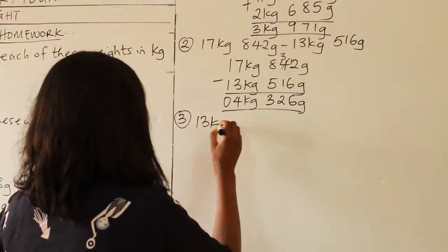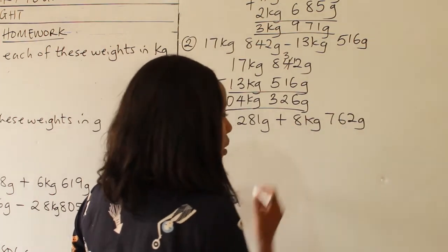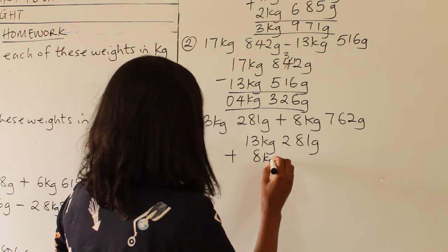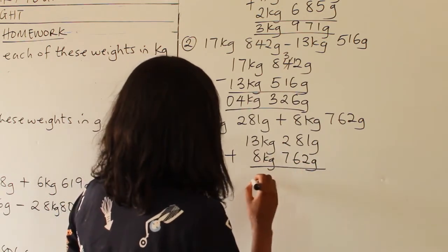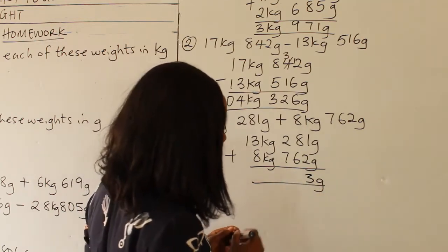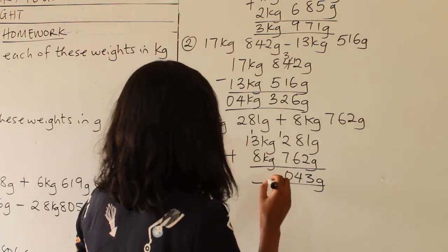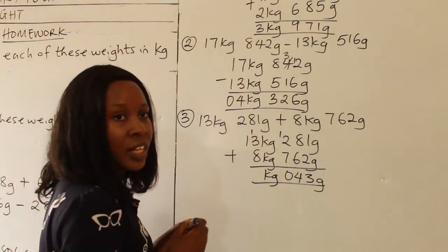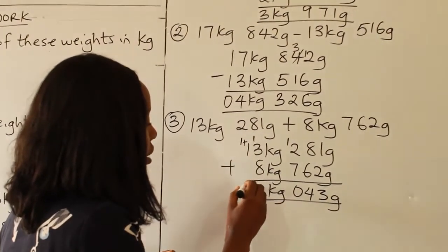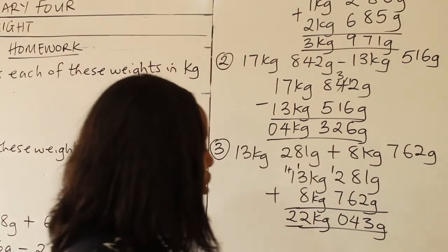Question 3: 13 kg 281 g plus 8 kg 762 g. Adding grams: 1 plus 2 is 3. 8 plus 6 is 14 — write 4 carry 1. 1 plus 2 plus 7 is 10 — write 0 carry 1. For kilograms: 1 plus 3 plus 8 is 12, then 1 plus 1 is 2. Our answer is 22 kg, 043 grams.